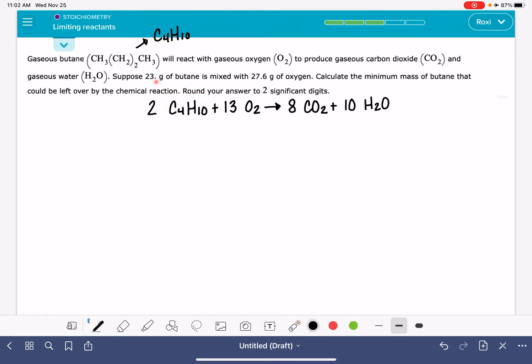This particular problem is giving us, just like all of our limiting reactant problems, it's giving us a mass of butane and it's giving us a mass of oxygen. And it's asking us to calculate the minimum mass of butane that would be left over by the chemical reaction. So because the way that this question is worded, calculate the mass of butane that would be left over, that is implying to us that butane is our excess reactant.